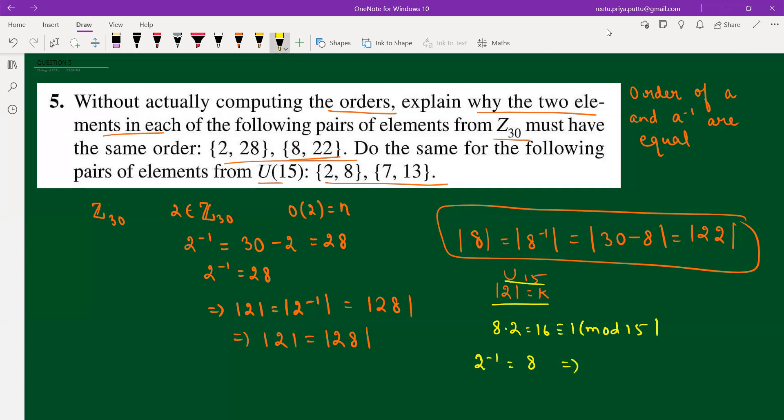And from the corollary or the theorem of question number 4, you can say that order of 2 is equals to order of 8. Similarly, order of 7 is equals to order of 13.